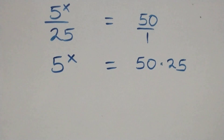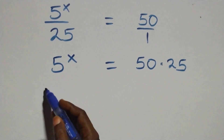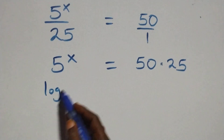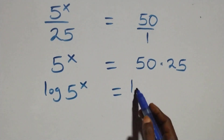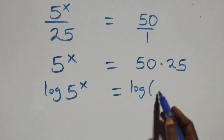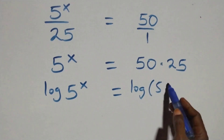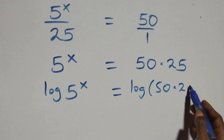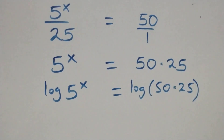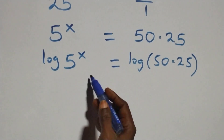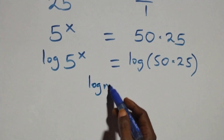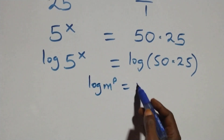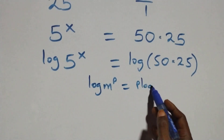The next step here, we take the log on both sides. We have log of 5 raised to power x equals to log of 50 times 25. Here we apply the power rule of logarithm: log m raised to power p is the same thing as p log m.